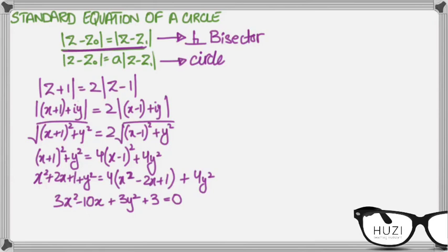I'm not going to do here, but once you complete squares, this would become 3x minus 5 over 3 squared plus 3y squared equals to 25 over 3 minus 3.